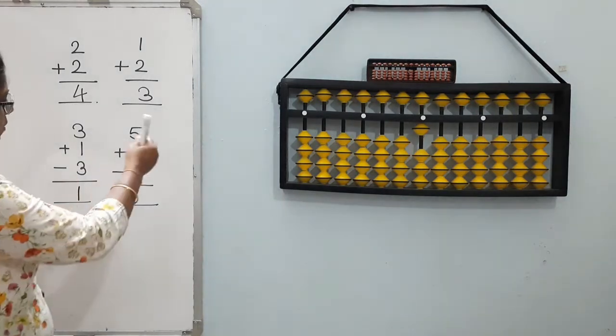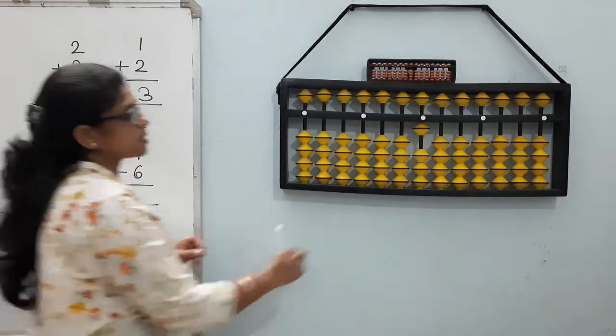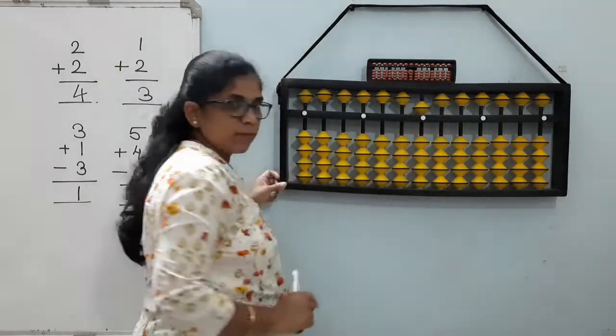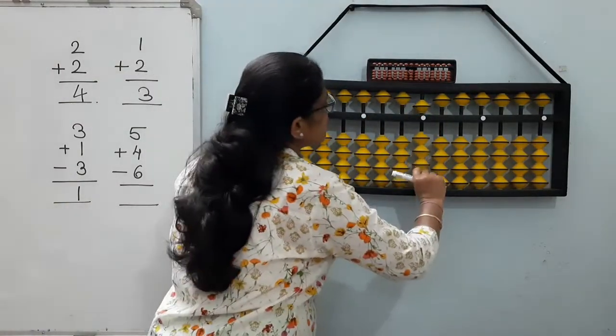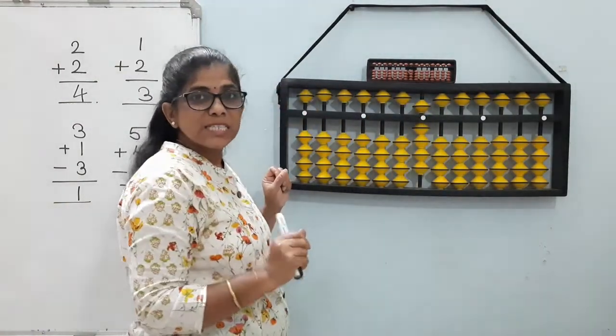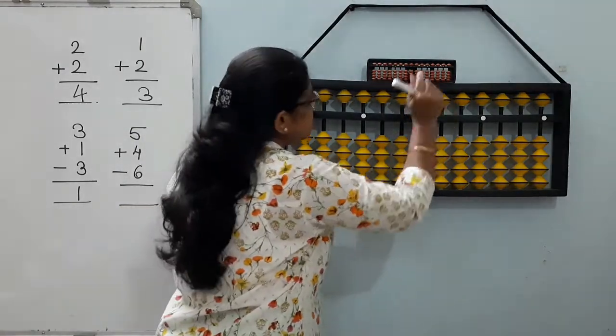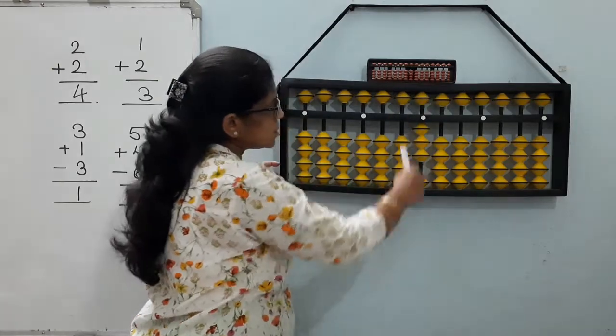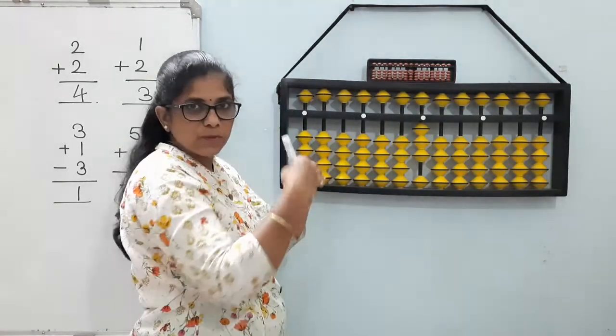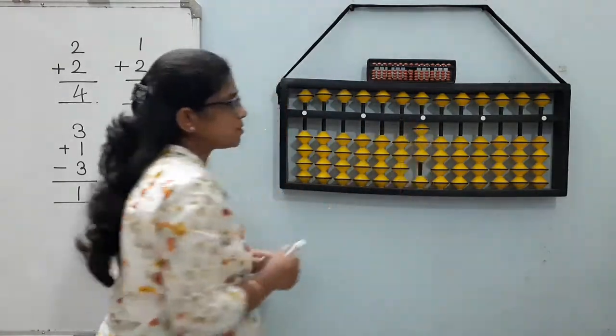Now next is 5 plus 4 minus 6. We know that this is 5 plus 4 minus 6. Now 6 means it is 5 and 1. So 5 and 1. So this is how we do, minus 6. Answer is 3.